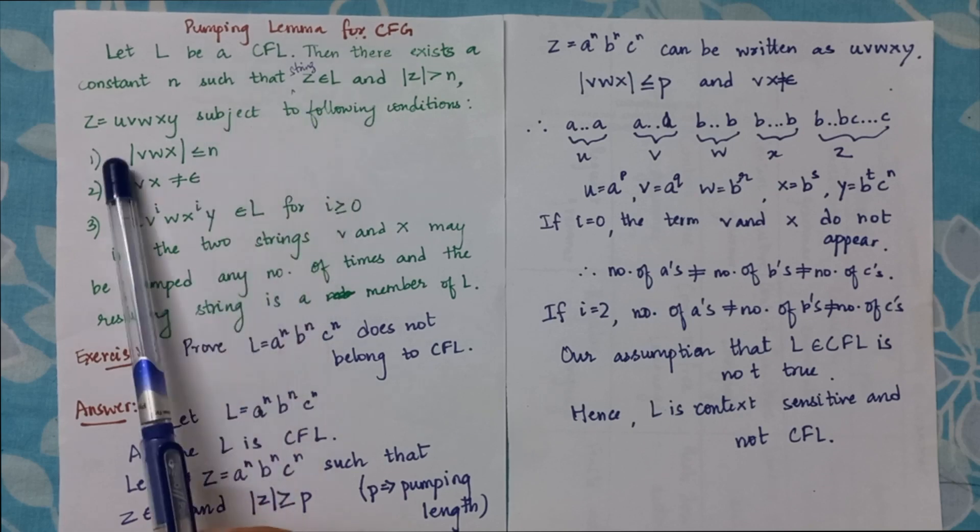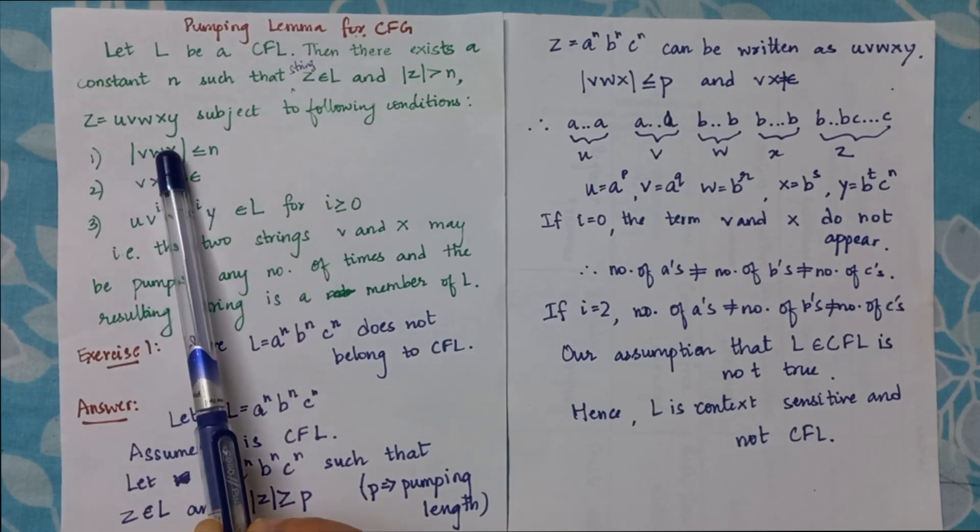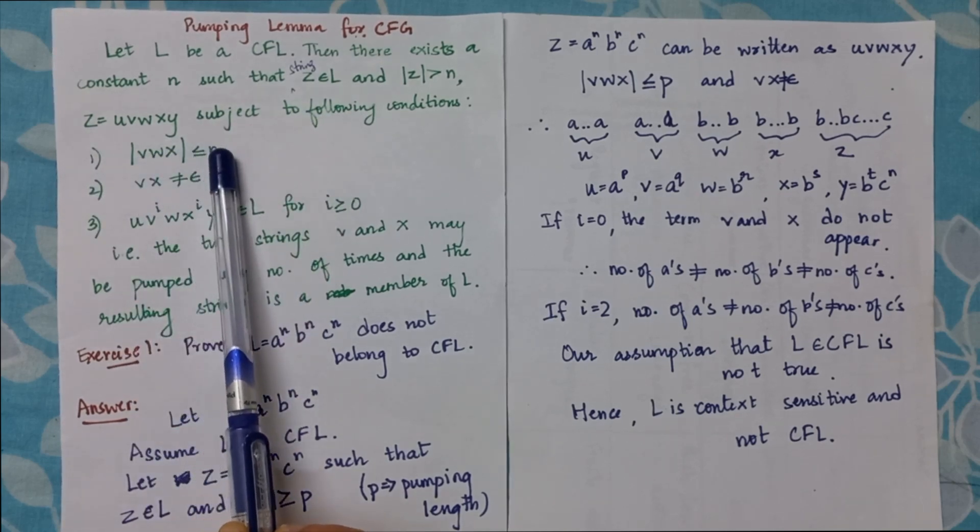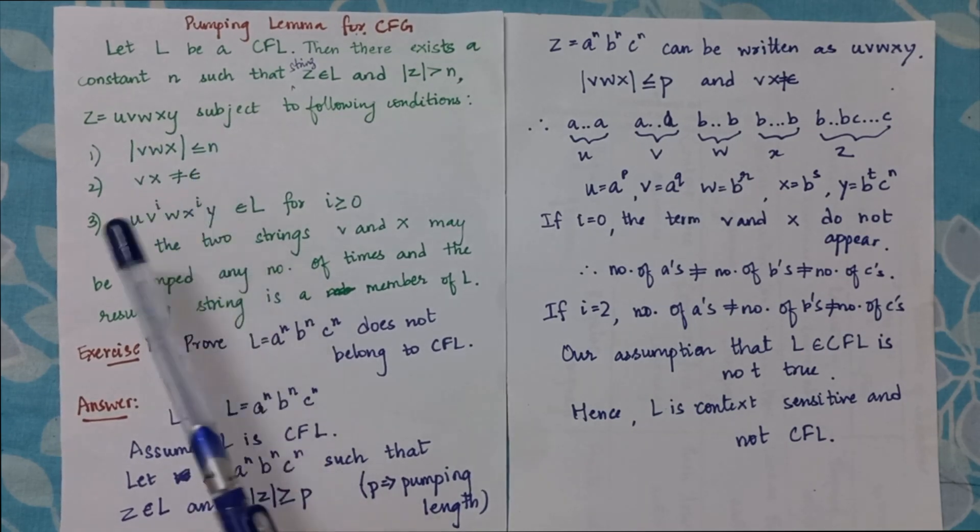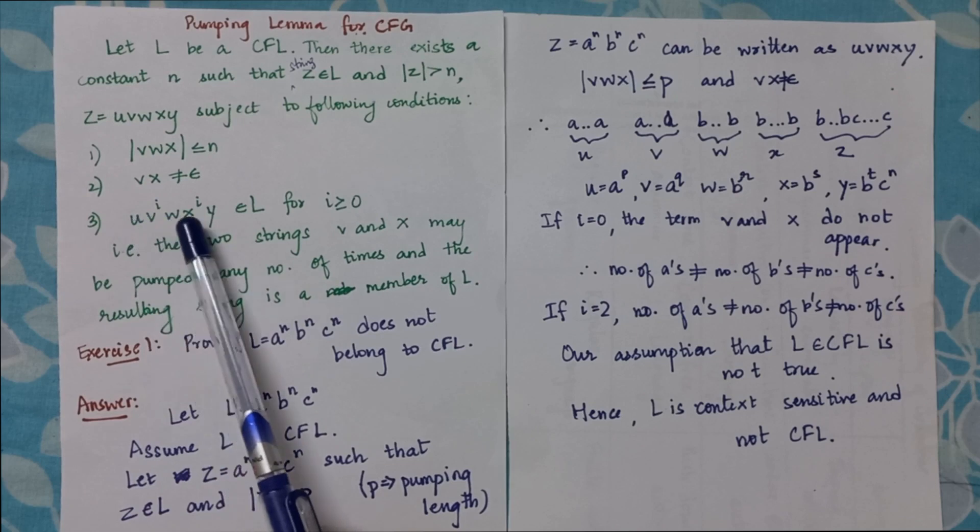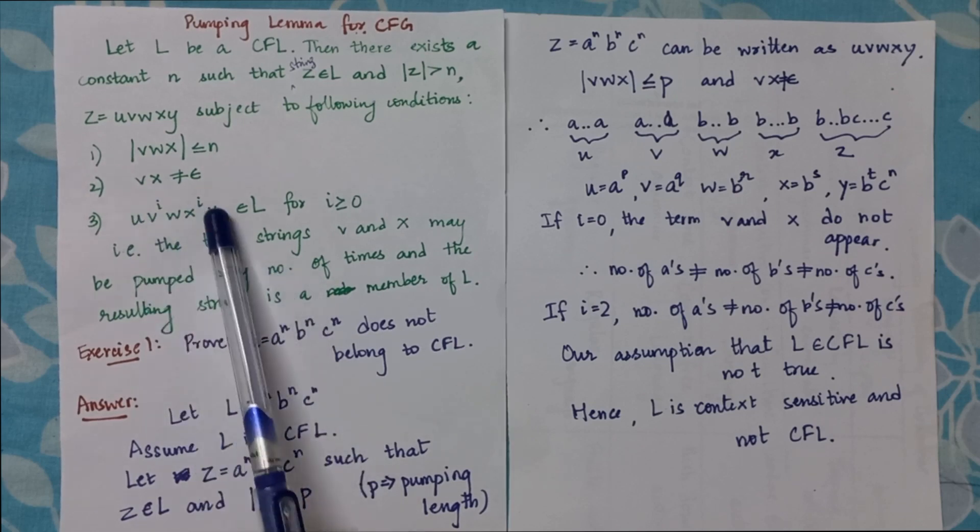Subject to the conditions: the length of vwx has to be less than n; v and x cannot be null; and if v and x are pumped several times, the resulting string should also belong to L, that is, it should also belong to a context-free language.